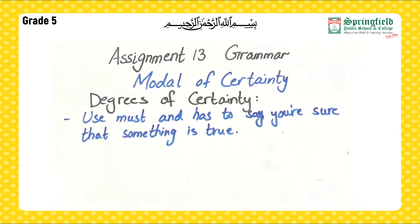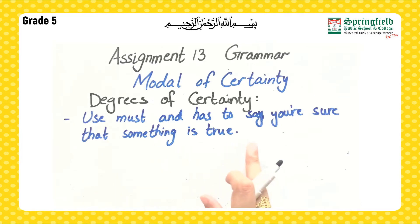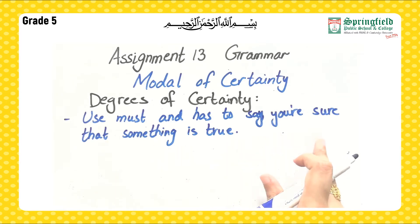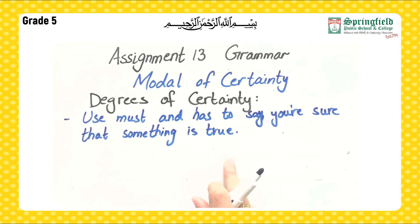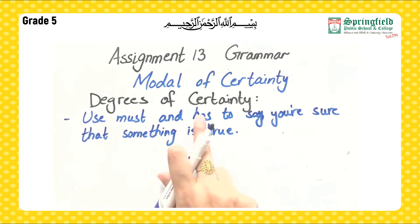About modals of certainty — there are degrees of certainty. Certainty shows how sure you are about something. The first degree of certainty: use 'must' and 'has to' when you are sure that something is true — when you are a hundred percent sure, you use 'must' and 'has to.'